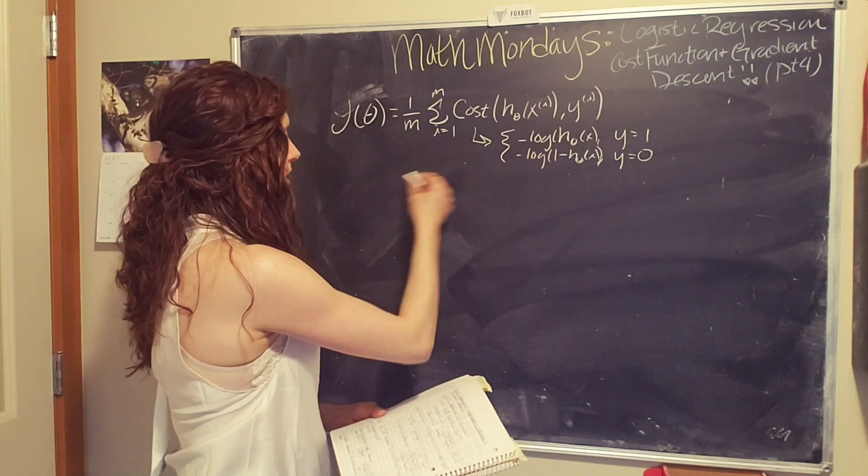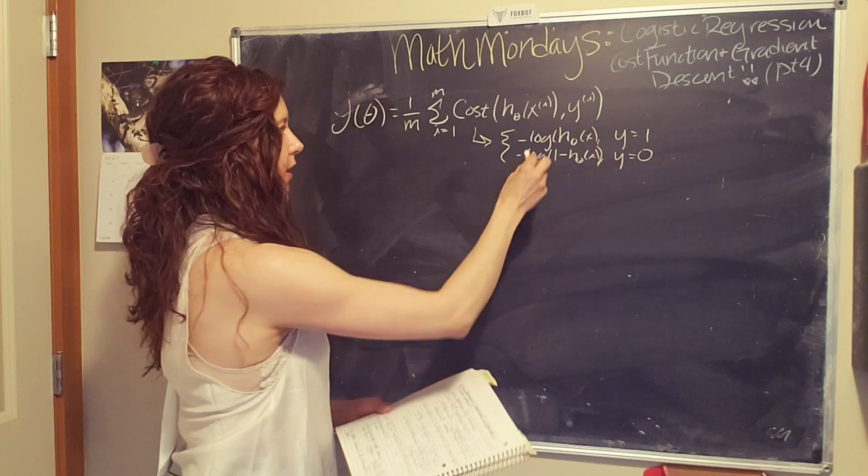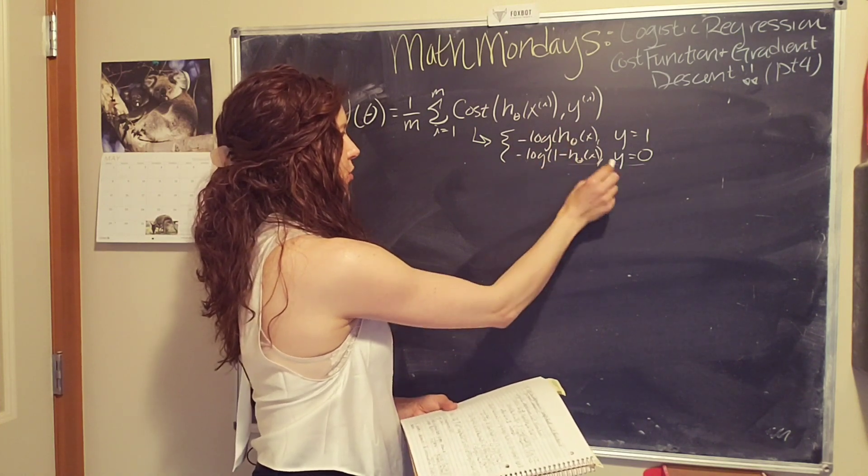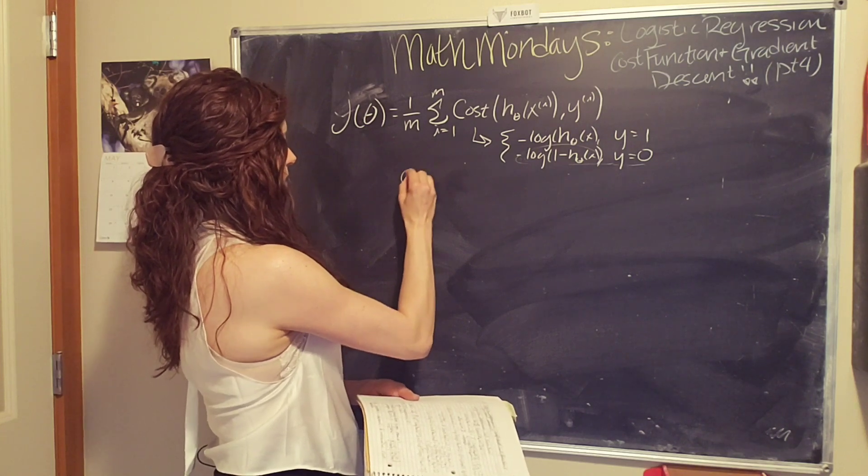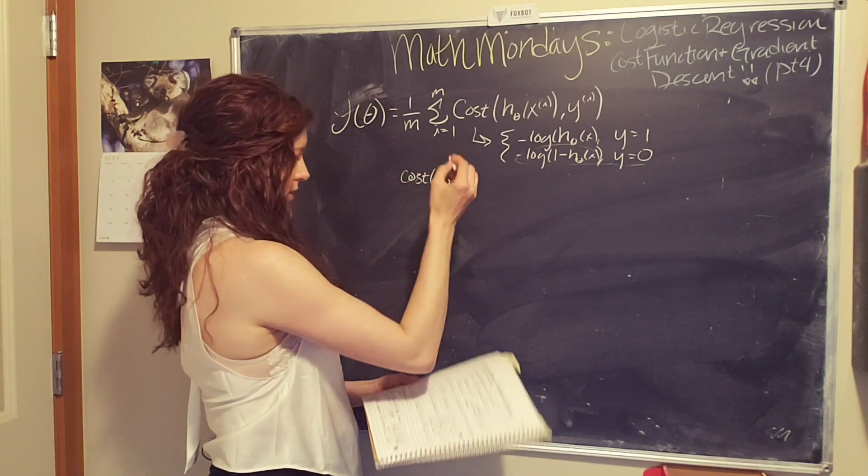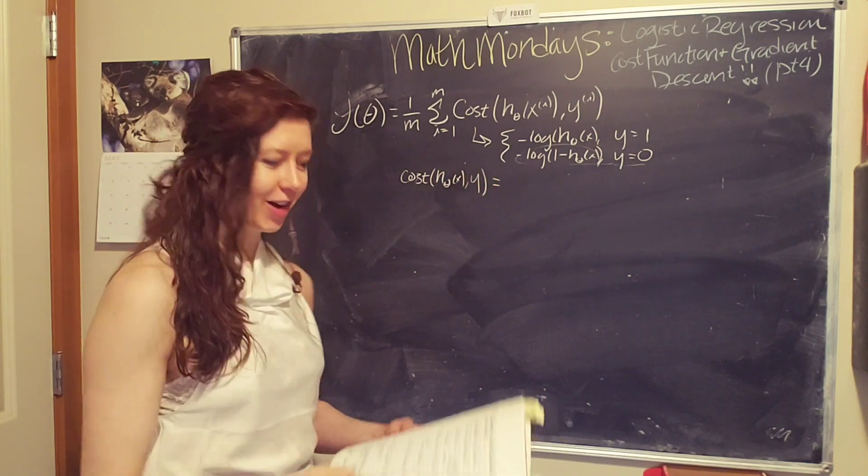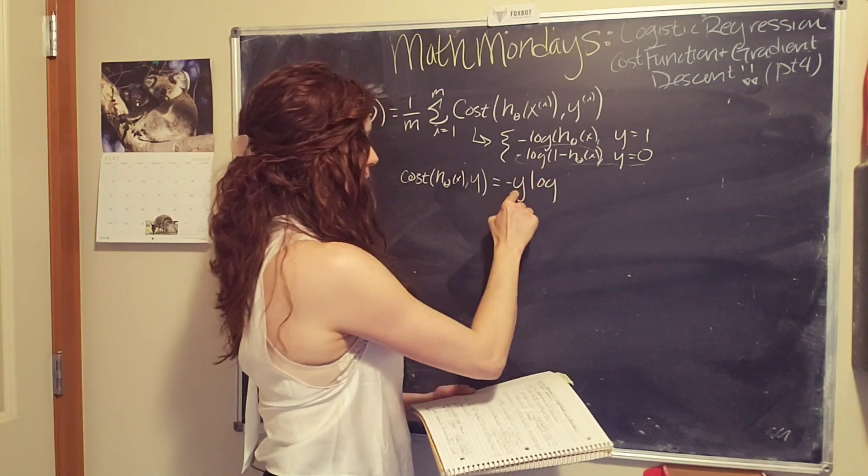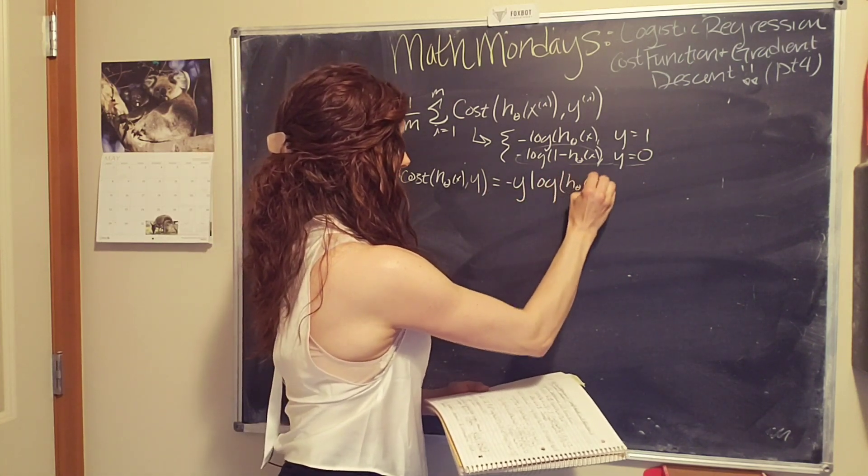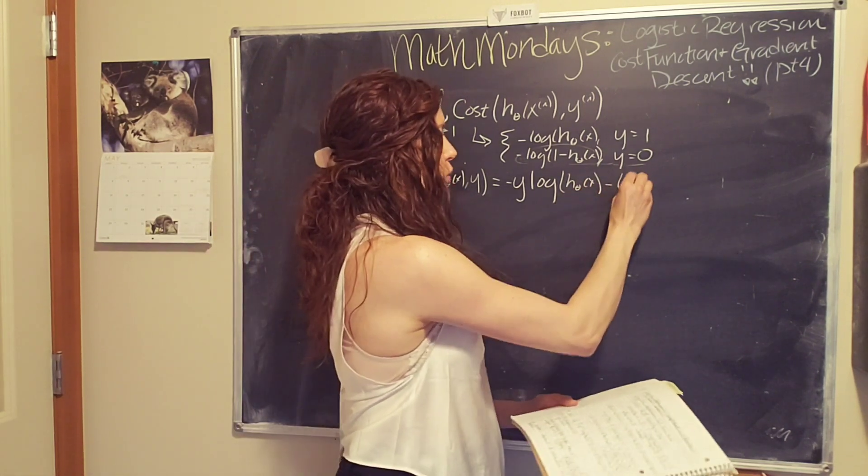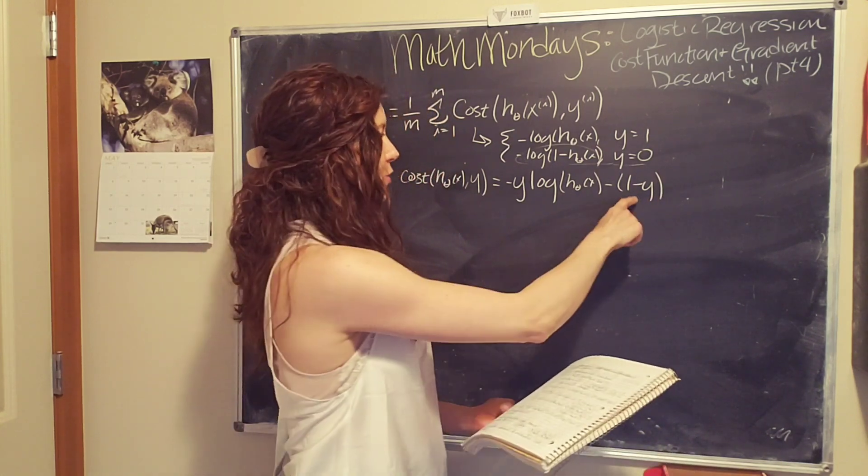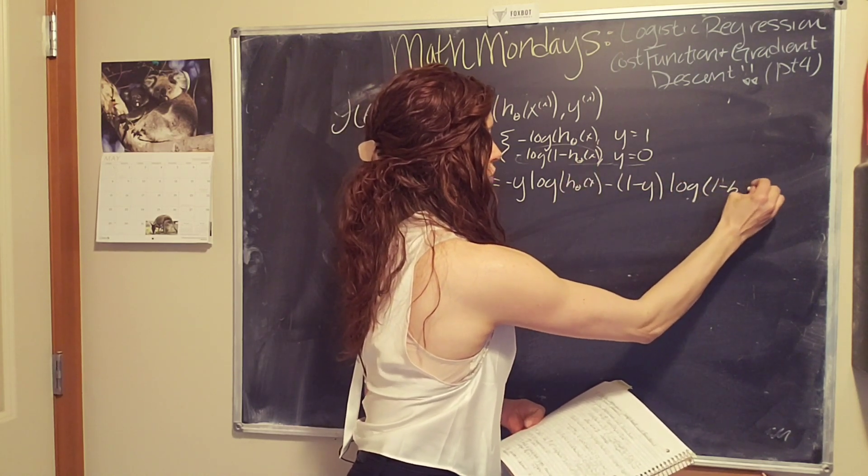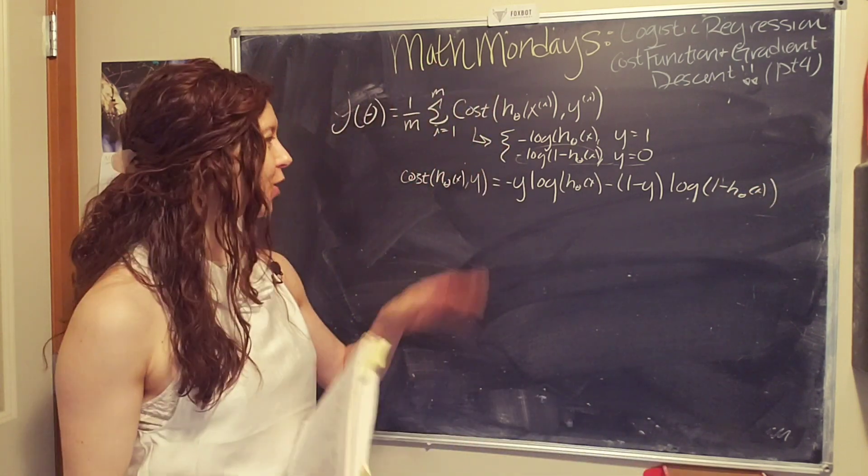Okay, so if we smoosh these into one single equation, we want to think about these two scenarios. And basically, for the case of y equals one, we will want to end up with just this term here. And in the case of y equals zero, we want to end up with just this bottom term here. So we can write our cost function, h theta of x and y, as the following. Basically, we just use factors of y to help us get what we want. So a factor of negative y times log h theta of x, and then we're going to minus a factor of one minus y times log of one minus h theta of x.